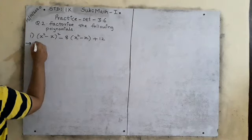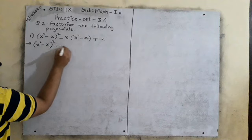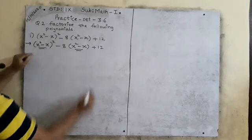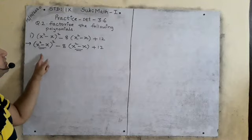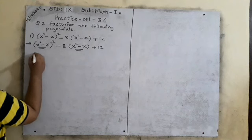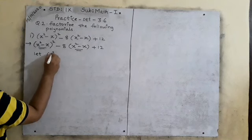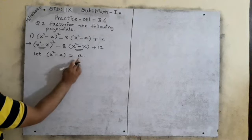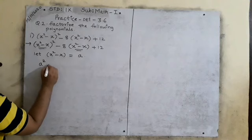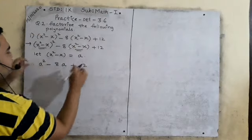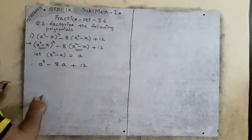First I will copy the question as it is: x squared minus x, bracket squared, minus 8 times x squared minus x, plus 12. See, this term and this term are like terms — x squared minus x appears twice. So we will consider some alphabet, any variable — let x squared minus x equals a. So now we will consider a here. This gives us a squared minus 8a plus 12. We have changed this polynomial into a trinomial. Can we factorize it now? Easily.